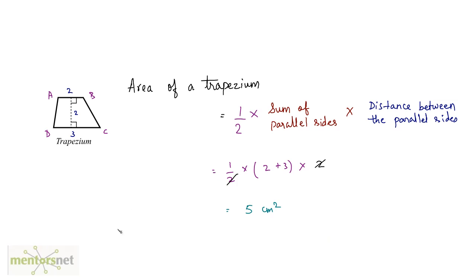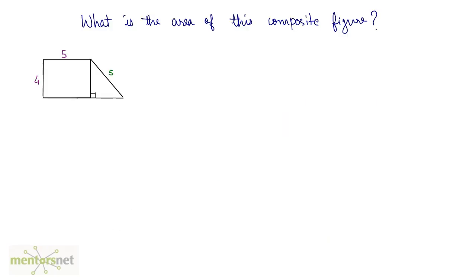So the formulas are very easy. Let us put them to test by solving this question: what is the area of this composite figure? This composite figure is basically a trapezium, but we will try to solve it traditionally. This composite figure contains a rectangle and a triangle. The area of this figure will be the addition of the area of the rectangle and the area of the triangle.